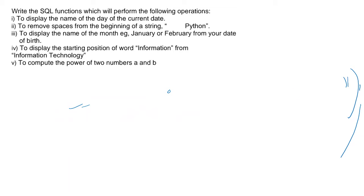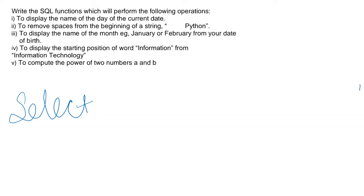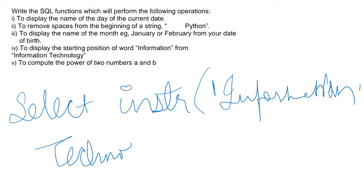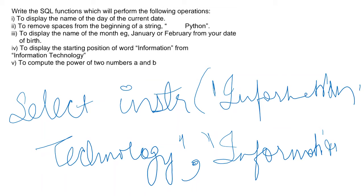Now the fourth question is to give the position of 'information' from 'information technology'. I have already told you this is a very important question. So we'll write SELECT INSTR — whenever you need to find the position, use INSTR. Inside the bracket you'll write 'information technology', and then the word whose position we need, which is 'information'.